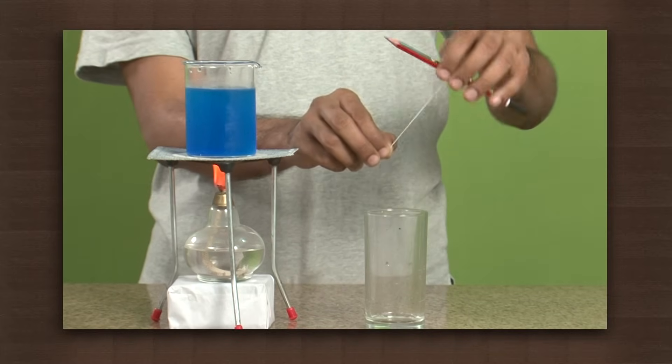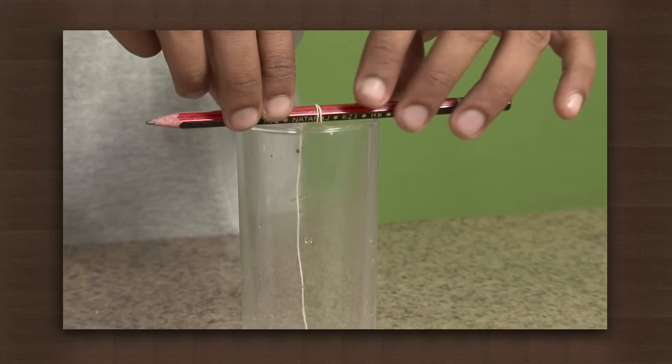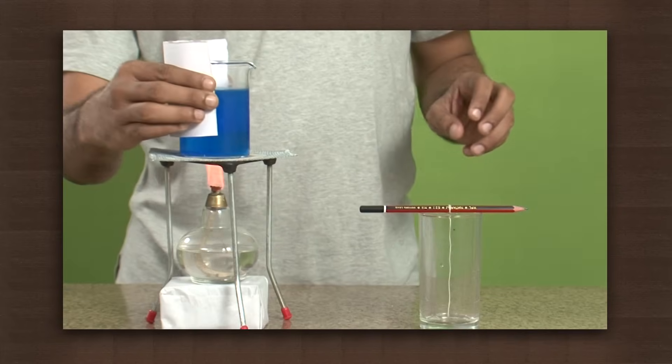Fasten a thread on a support and suspend it in an empty glass. This thread will act as a nucleation centre in the container.